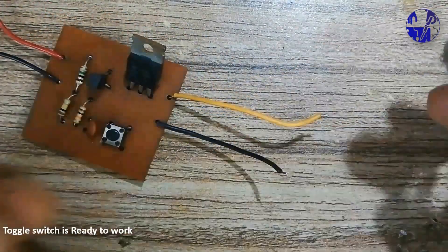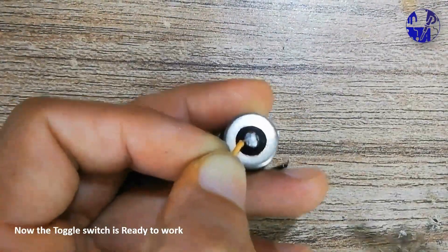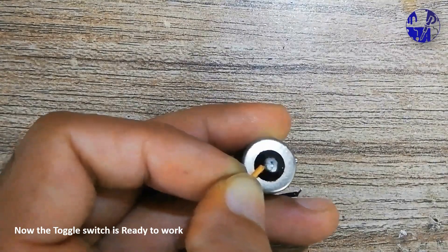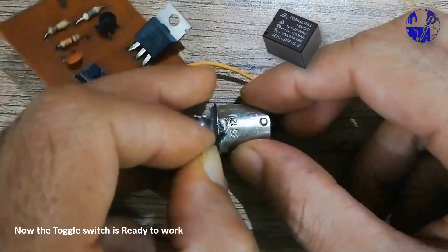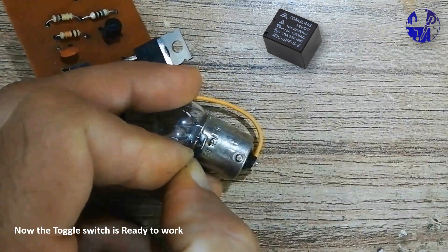The most straightforward and easy to make toggle switch is now ready to work. You can replace the DC load with the relay to control an AC load.